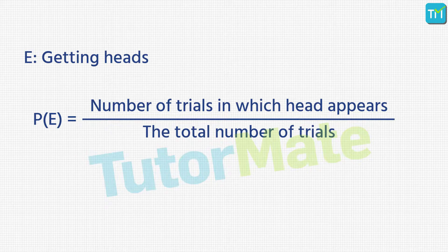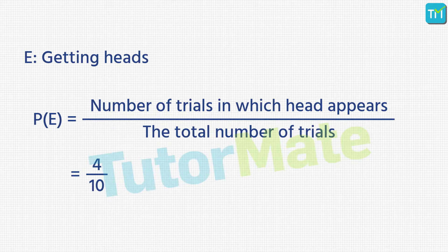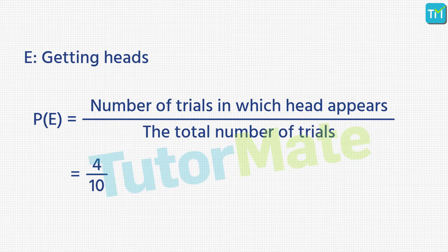The probability of getting heads is 4 upon 10. I think that is enough theory and examples for now. Let us solve some numericals using the definition for empirical probability.